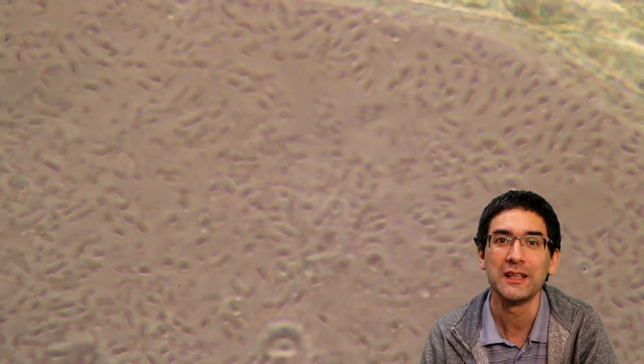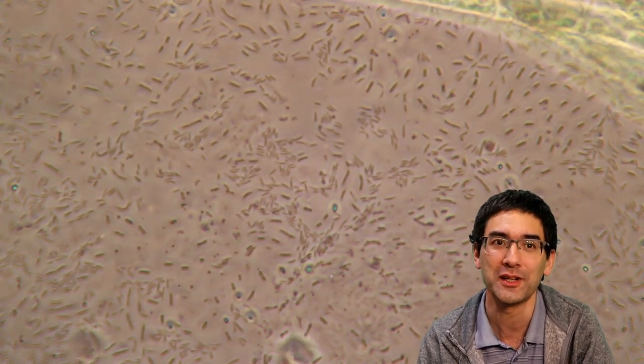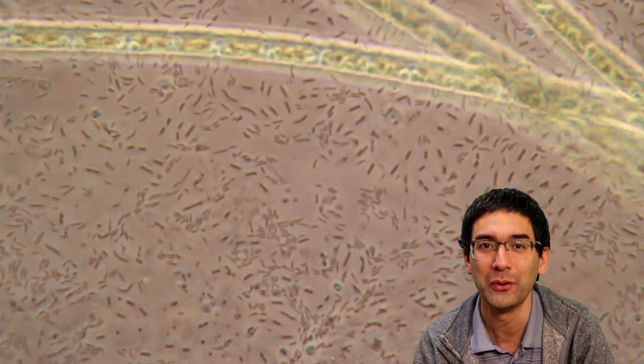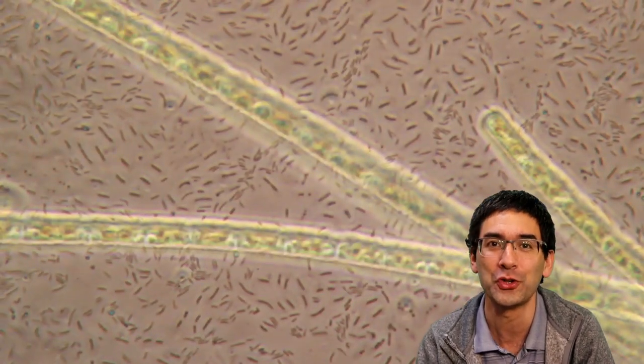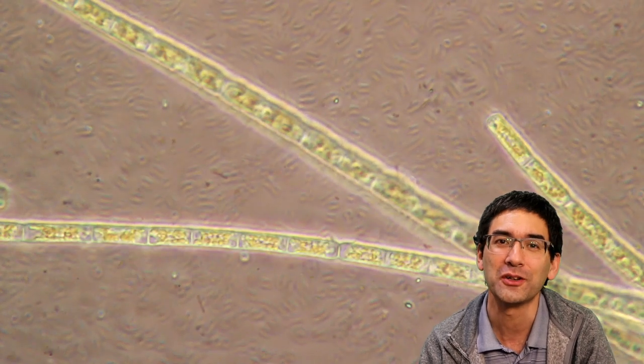Then I filtered it and again added some algae. This is basically what I saw: lots of bacteria, because of course they also grow and feed on the nutrients, and also algae like these green filamentous structures that you see here.